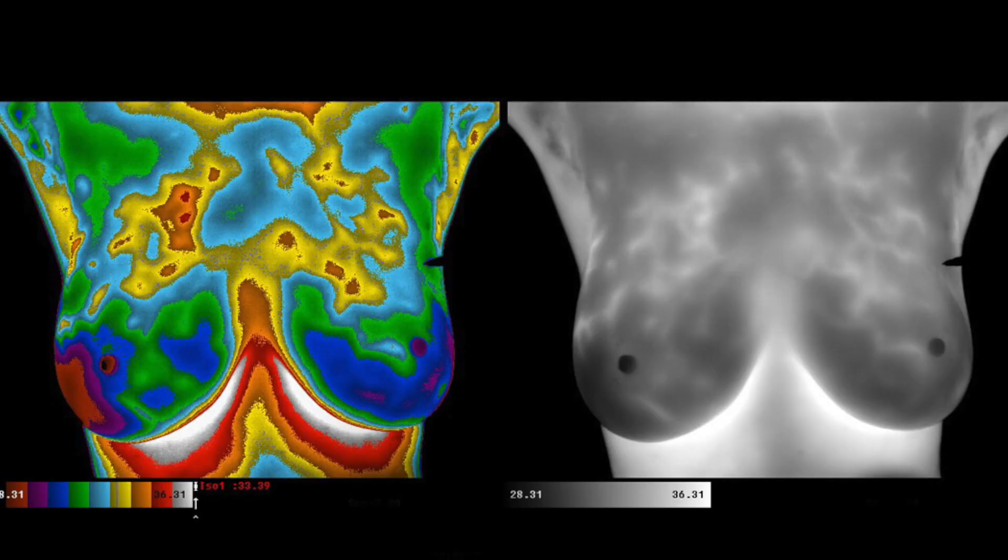...picture of the breast using heat technology. You would have to cool down first. We cool down the room, the camera itself cools down, and then we take a picture of your body using this heat camera. It generates an image which looks something like this. When we look at the image, we can determine if there's...